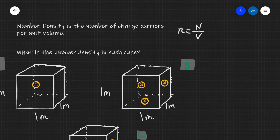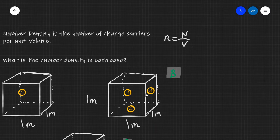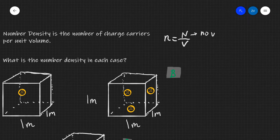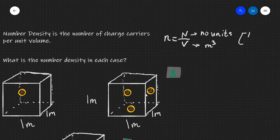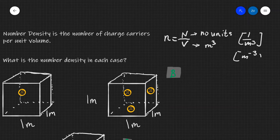So what are the units of this equation? Well, the number of charge carriers is just a number, so this quantity on the top of the fraction has no units, whereas the bottom of the fraction has units of volume, which is meters cubed. So the units of number density are essentially one over meters cubed, and the way we would normally write that is m to the power of minus three.